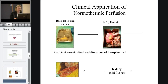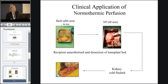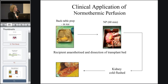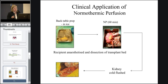Normothermic perfusion can be introduced quite simply. Once a suitable kidney has been identified and the recipient consented, whilst the recipient is being prepared for the transplant procedure, we have a window in which to perform the normothermic perfusion. The kidney is prepped — the renal artery, vein, and ureter are cannulated — and it then undergoes a period of normothermic perfusion of around 60 minutes. Once the patient is ready for the transplant procedure, the kidney is removed from the system, flushed with cold preservation solution, and transplanted immediately.